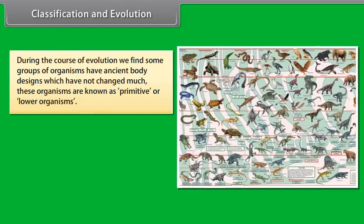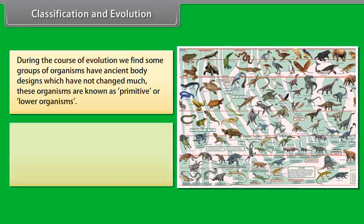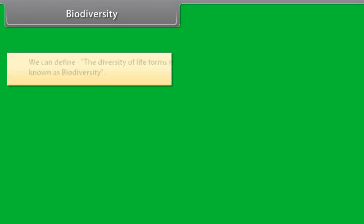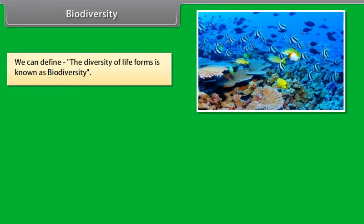During the course of evolution, we find some groups of organisms have ancient body designs which have not changed much. These organisms are known as primitive or lower organisms. While another group of organisms have acquired their body designs during the course of evolution; these are known as advanced or higher organisms.